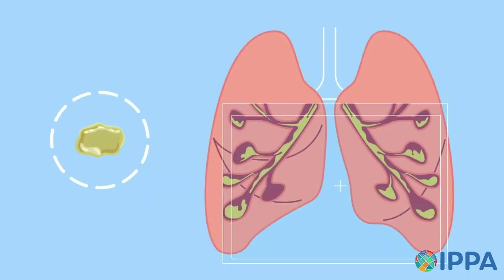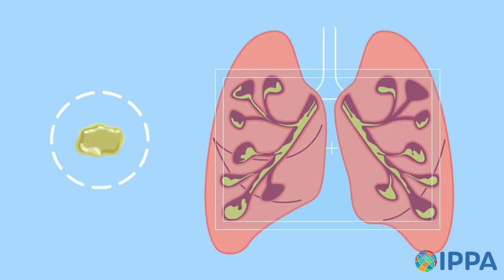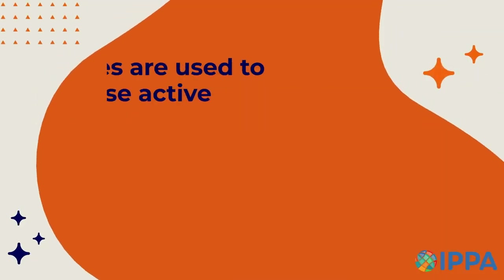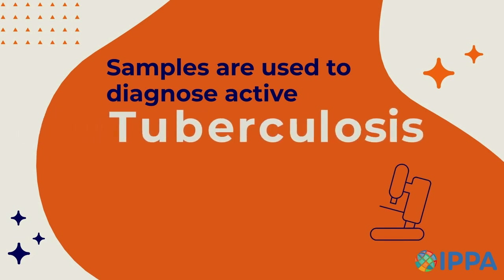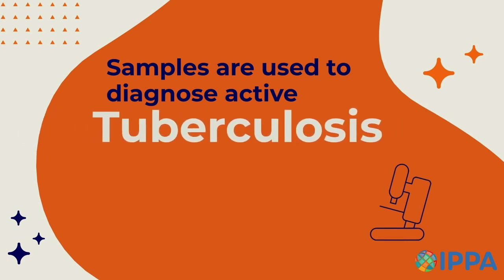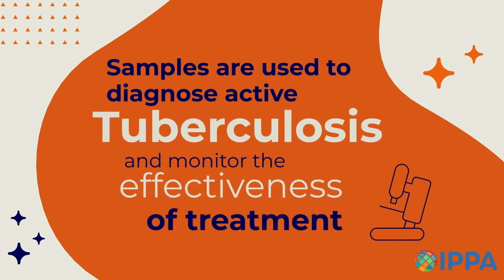Sputum is mucus or phlegm coughed up from your lungs. Sputum samples are used to diagnose active tuberculosis (TB) and to monitor the effectiveness of TB treatment.